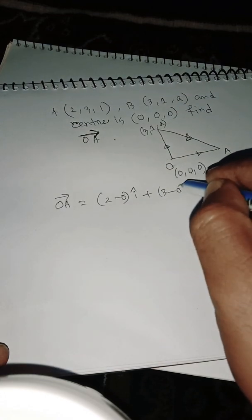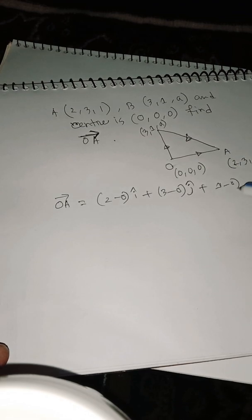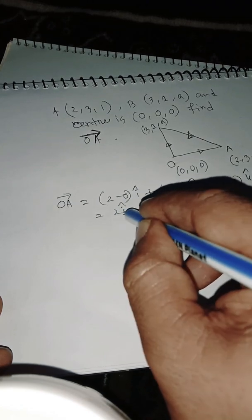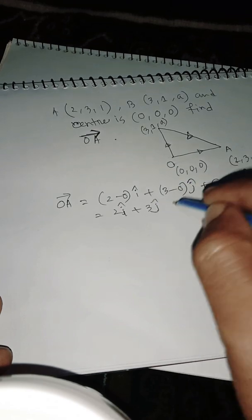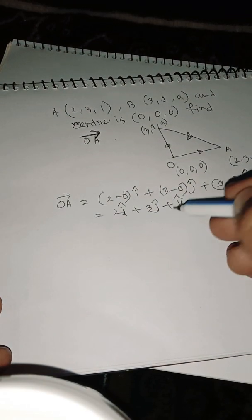This gives us 2i plus 3j plus k, where we have the unit vectors i, j, and k. We've found the vector, now we need to find its magnitude.